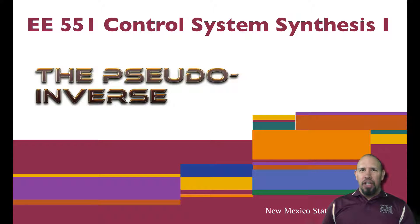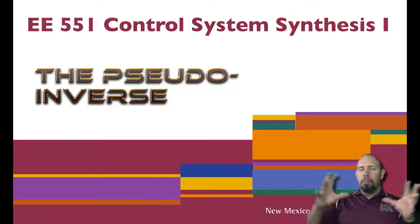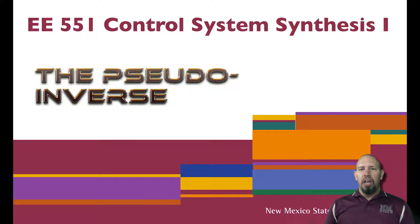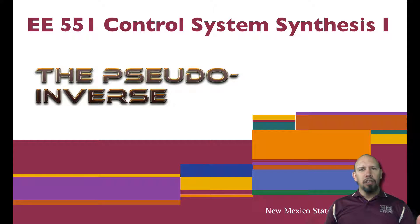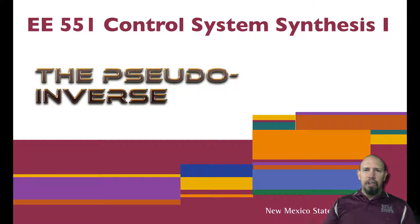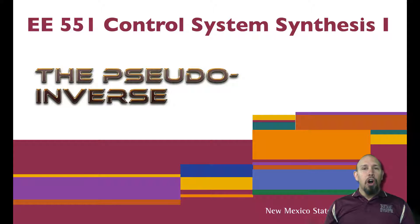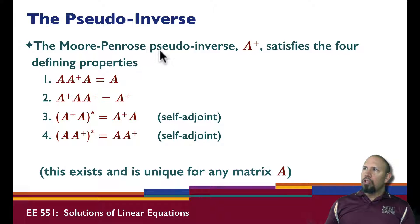We're talking about the pseudo inverse — pseudo meaning false, so false inverse. It turns out that of the many different types of matrices, only a few have a true inverse. Most matrices are tall and thin or short and fat; they're not even square, so you can't compute an inverse for them. But you can always compute the pseudo inverse for any matrix. The pseudo inverse, or the Moore-Penrose pseudo inverse, is written as A superscript plus.